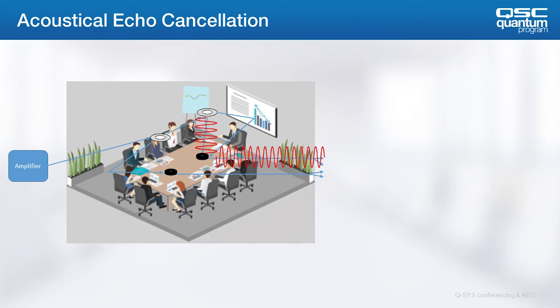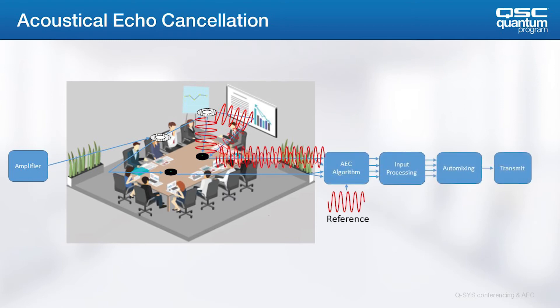To make things even more complicated, the microphones don't hear the far-end signal only once, but potentially a number of times based on the reflectivity of the room. There's a direct signal from the speaker to the microphone, but there are also signals reflected off the surfaces in the room and back into the microphone. These are known as acoustic echo. Based on the reflectivity of the room, we end up sending many time-shifted signals of varying levels to the microphones.